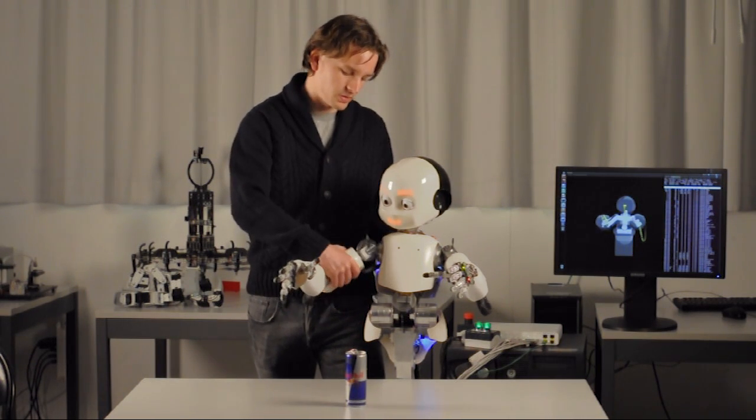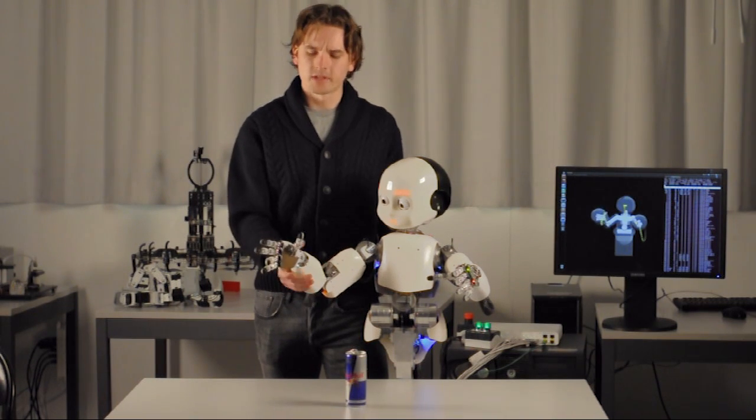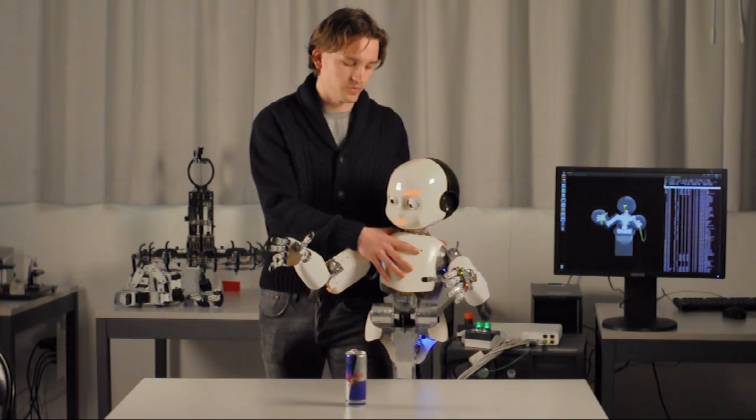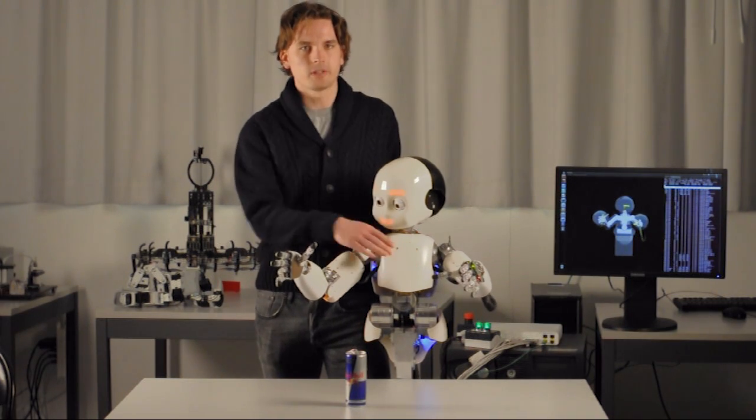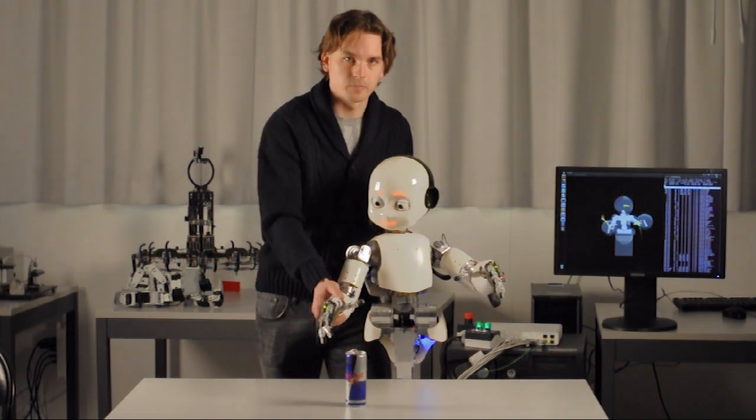The shoulder has three joints, the elbow has one joint, the wrist has another three joints, then there is a torso with another three joints. And all this has to move in perfect synchrony in just the right way to pick up this can.